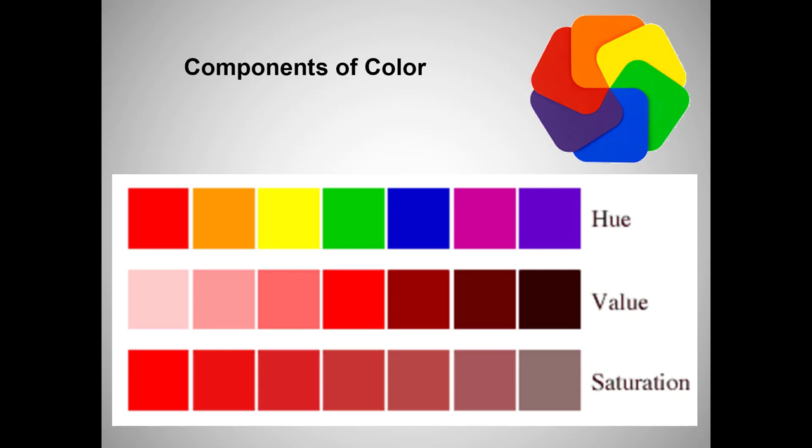It might be a good time to review some concepts introduced early in the course: hue, value, and saturation. Hue is what we usually think of as color — red, blue, yellow, green, etc. Value is defined as the relative lightness or darkness of a color; artists use value to define form and create spatial illusions. If values are close — light against light, dark against dark — shapes seem to flatten out and appear closely connected. If values are contrasting — light against dark — shapes will appear to separate in space.